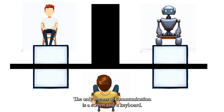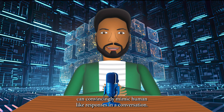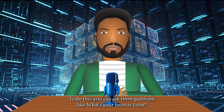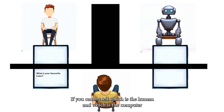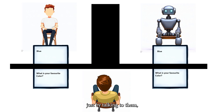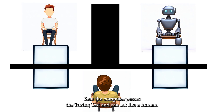The only means of communication is a screen and a keyboard. The main purpose of the Turing Test is to assess whether a computer or artificial intelligence system can convincingly mimic human-like responses in a conversation. To do this, you can ask them questions like, what's your favorite color, or tell me a joke. If you cannot tell which is the human and which is the computer just by talking to them, then the computer passed the Turing Test and can act like a human.